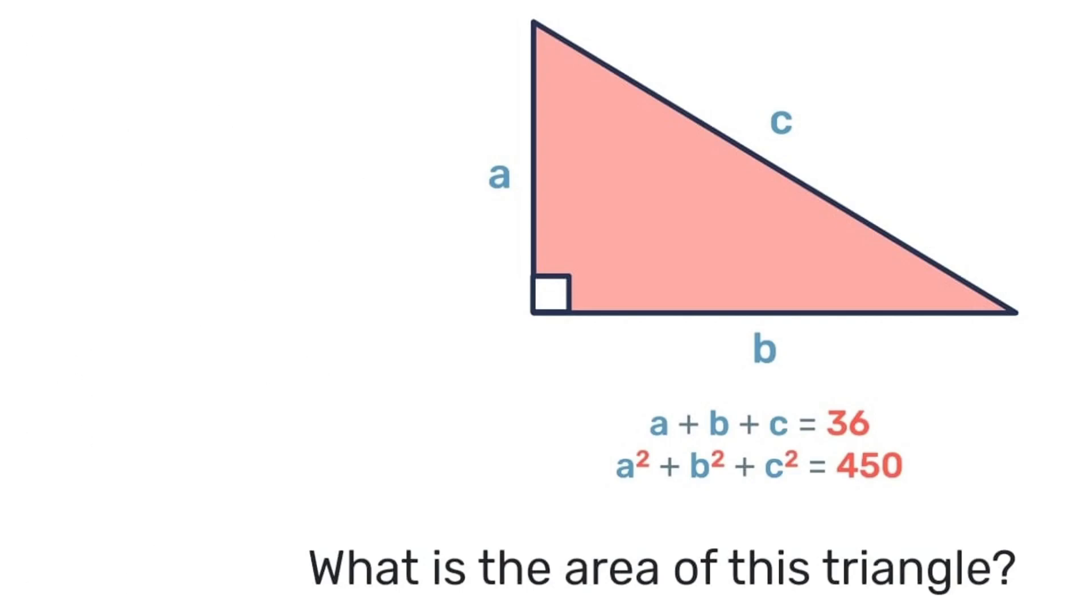All right, so let's see. We have ab is 108, and we also have that the area is half base times height. So half times 108 gives us the area is 54 square centimeters.